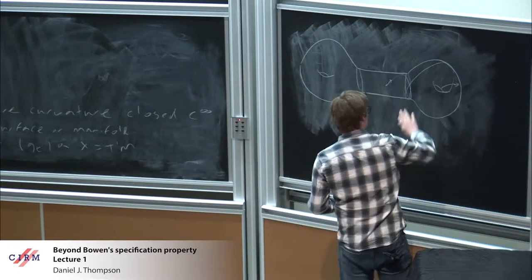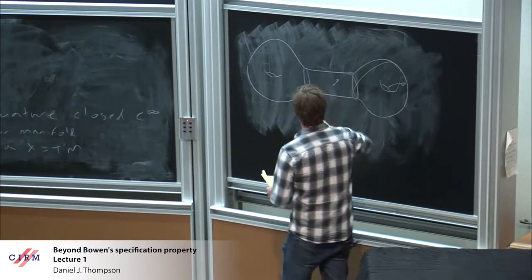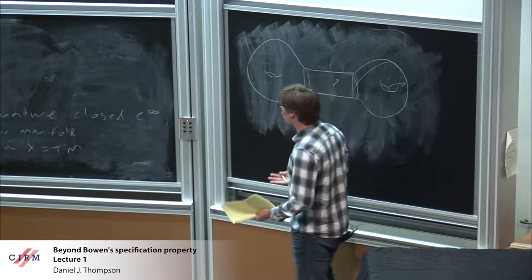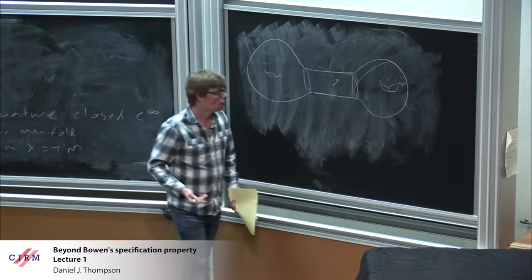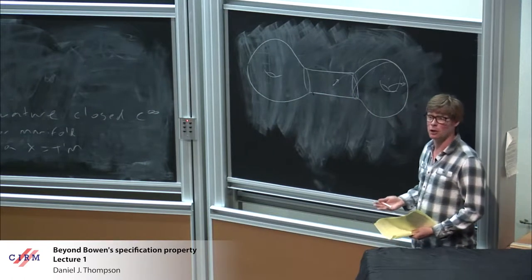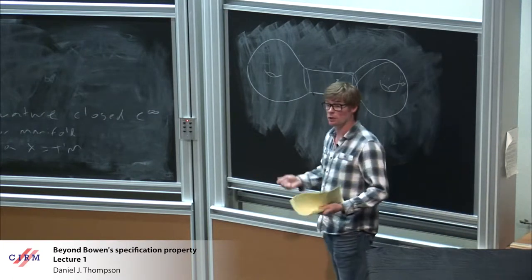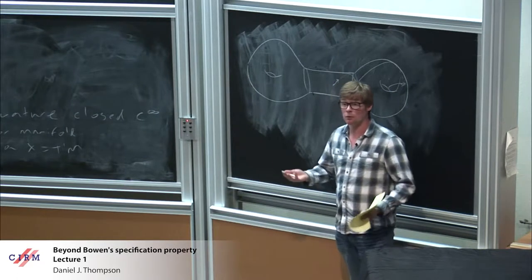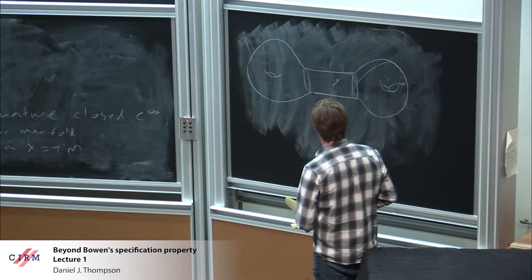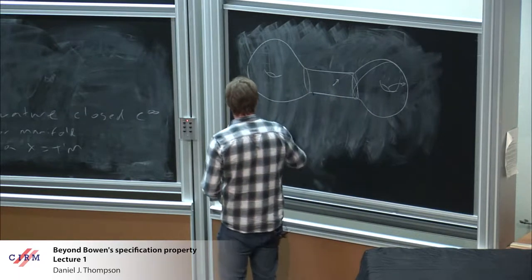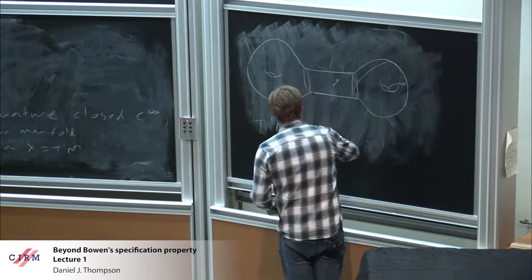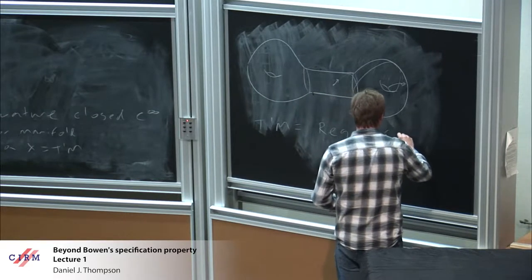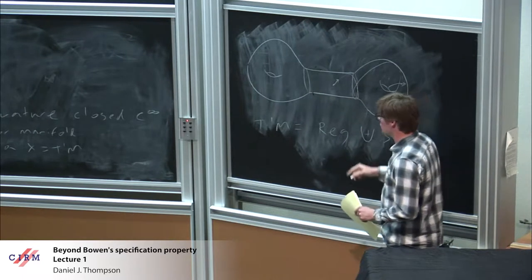The interesting thing about this situation is that you have high-complexity dynamics coming from the negative curvature, but also low-complexity dynamics coming from the zero curvature. The difficulty is having both phenomena coexist in the same dynamical system and figuring out which one wins. With that in mind, the unit tangent bundle is decomposed into two sets: the regular set and the singular set.